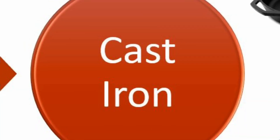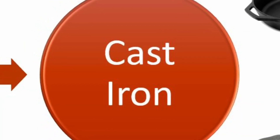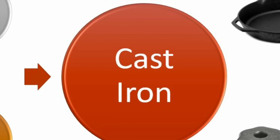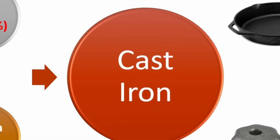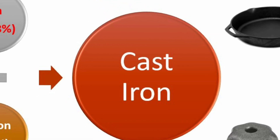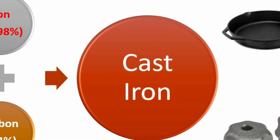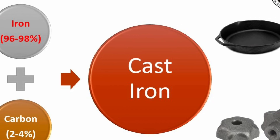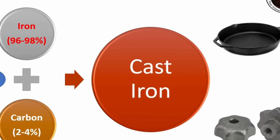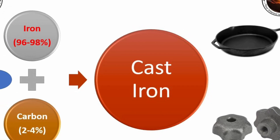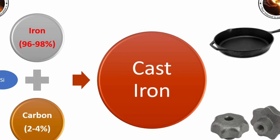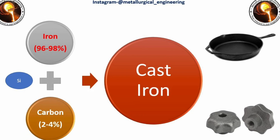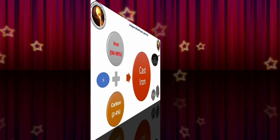Next is cast iron. It is an iron-based alloy and carbon and silicon are the main alloying elements. The composition of cast iron is 96 to 98 percent iron and 2.1 to 4.3 percent carbon. It is used in metal structures, bridges, and household utensils.